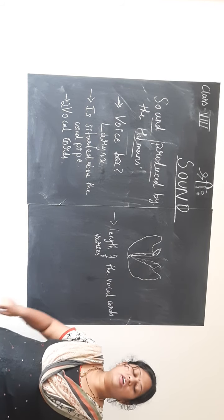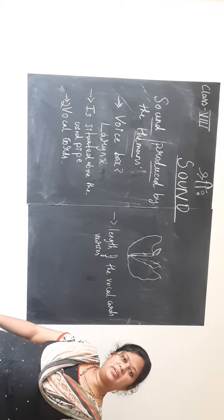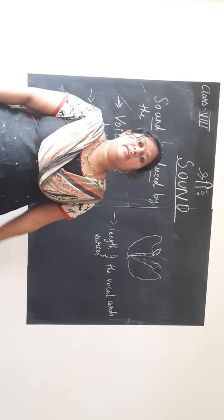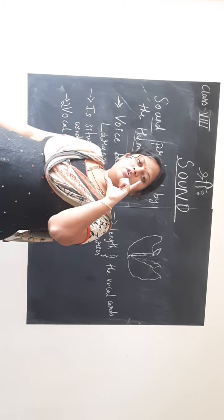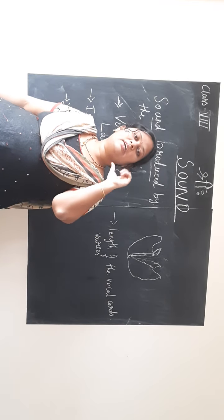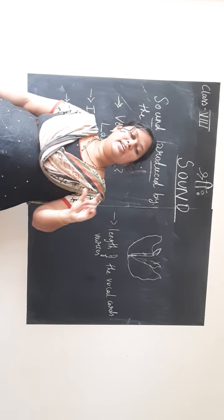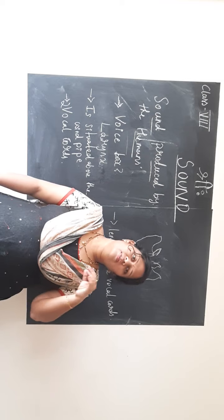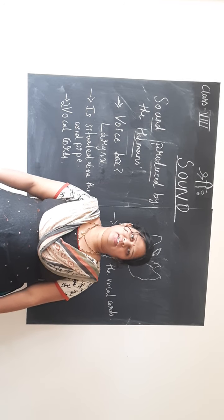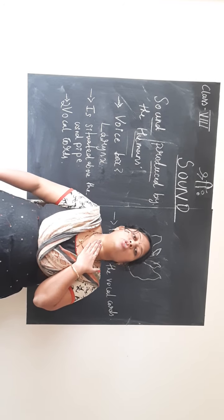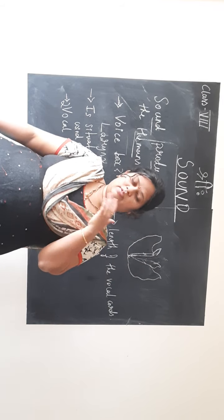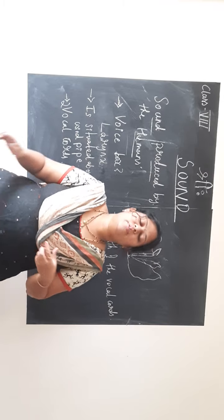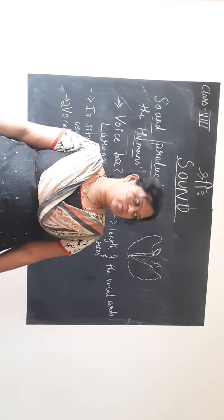The length of the vocal cord varies from person to person — from men to women and from women to children. The vocal cord of men is longer compared to that of women, and in case of kids the vocal cord length is very small. As and when kids grow, the vocal cord length also goes on increasing. That is the reason we see variation in the pitch, tone, or sound of voice between elders and kids, or between men and women.